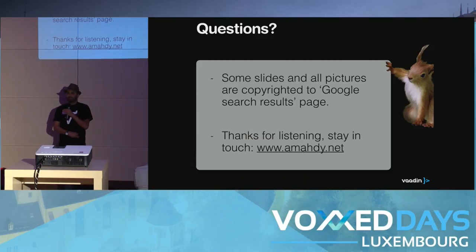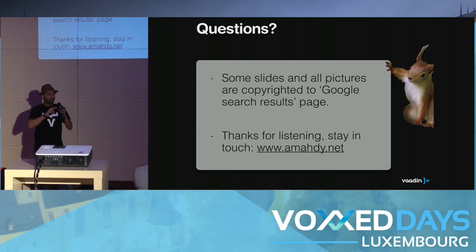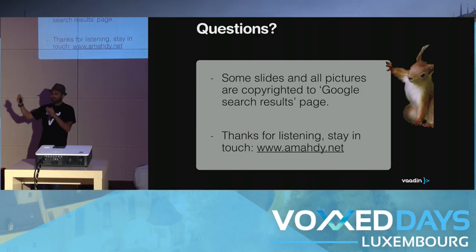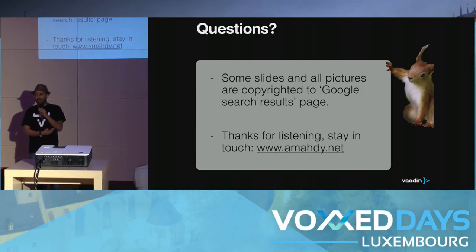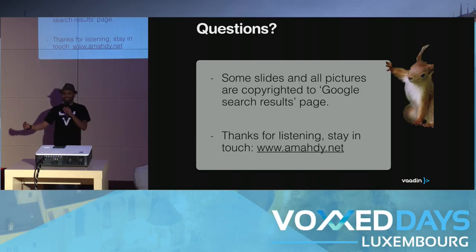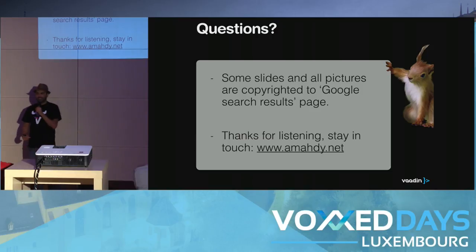I'm going to hang around if you want to see a demo. If you Google 'Vaadin expense manager', there is a nice demo that puts everything together — it works offline, shows how to use Polymer elements and components, and also how to use PouchDB for syncing data offline. Any questions? Time's up so I'm forced to take questions if there are any. Thank you for attending and have a great day.